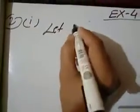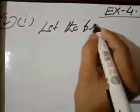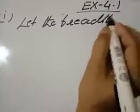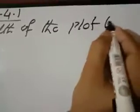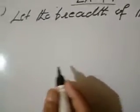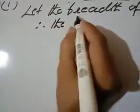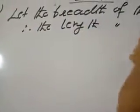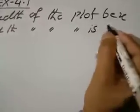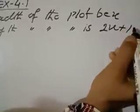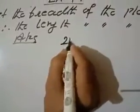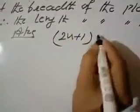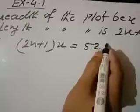First we will write: let the breadth of the plot be x. The length of the plot is 1 metre more than twice the breadth, therefore the length of the plot is 2x plus 1. According to the question, area equals length into breadth, so (2x + 1) times x equals 528.